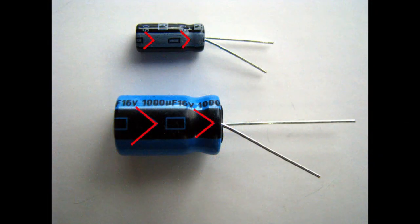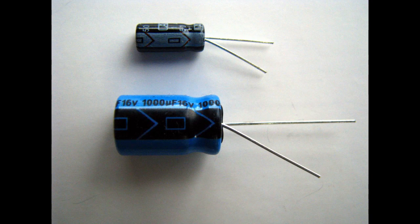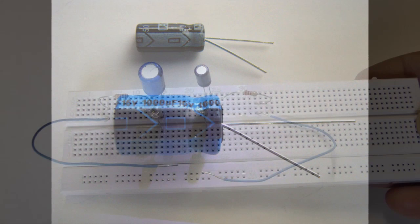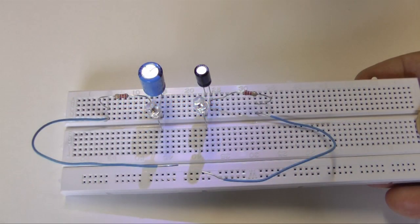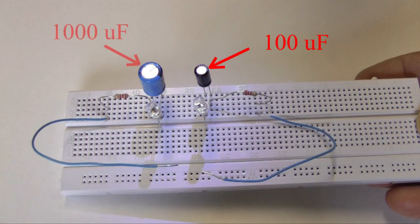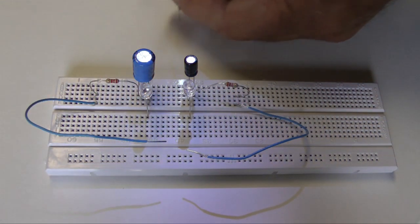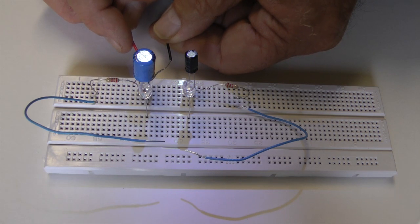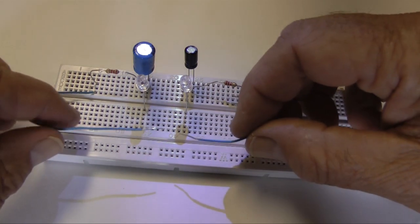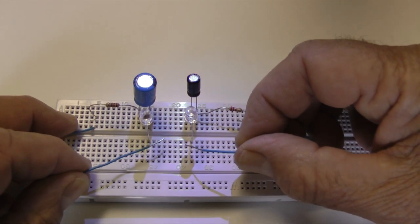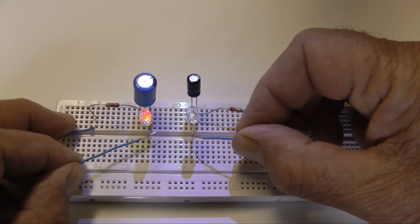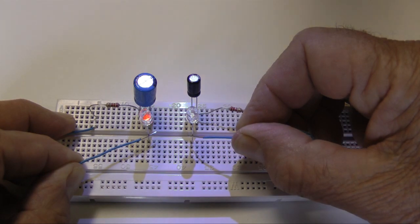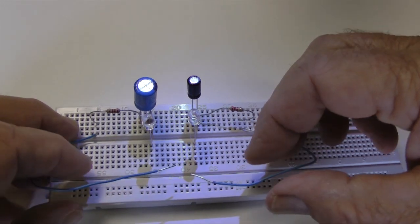Again, these arrows indicate the negative terminal. Not all capacitors are polarized. We can visually compare the output of capacitors with different values. This is a 100 microfarad, 25 volt capacitor. This is a 1000 microfarad, 16 volt capacitor. I charge both of them with a 9 volt battery, a voltage well under their rated values. Then, start them both discharging at the same moment. The 1000 microfarad capacitor powers the LED considerably longer.